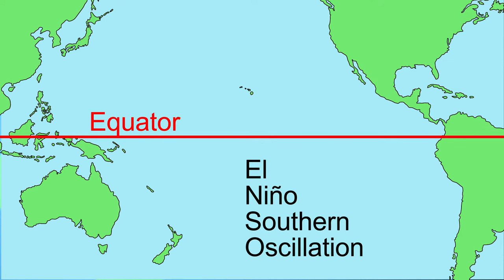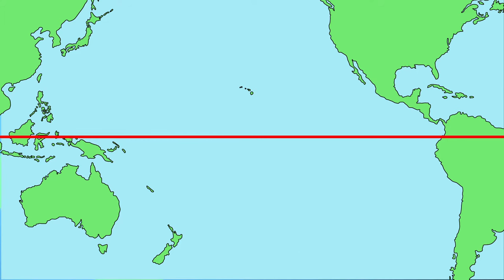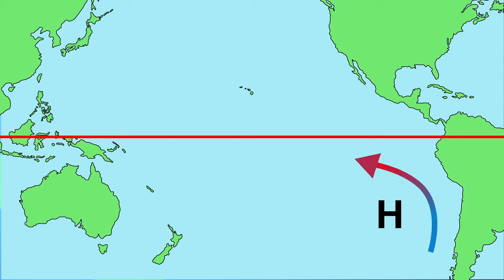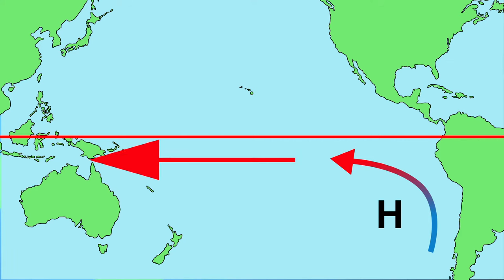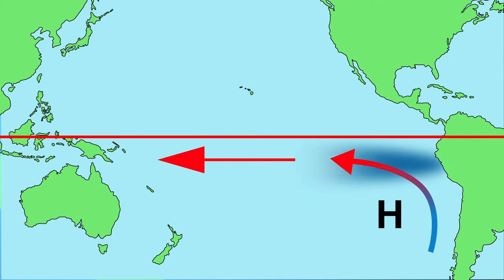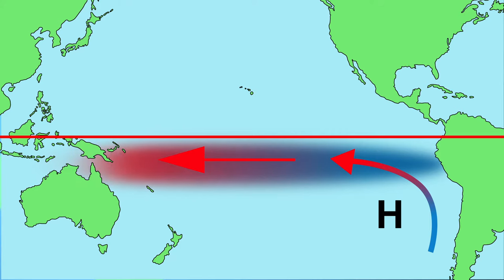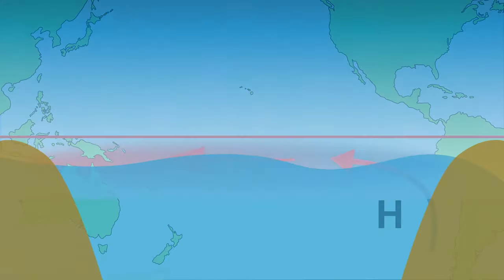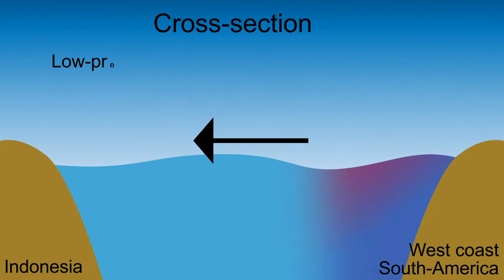To understand El Niño we must first explain the normal weather pattern. In a normal situation there is a high pressure area in the south-eastern part of the Pacific Ocean. The wind turns counterclockwise and takes cold seawater from the south to the equator. The trade winds from the east take the seawater to the west, where it heats up and is warm by the time it arrives at Indonesia, creating a low pressure area causing air to rise and rain.